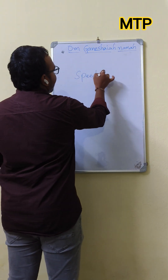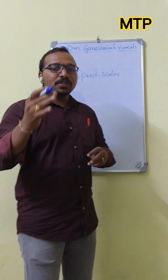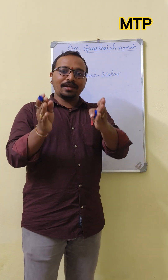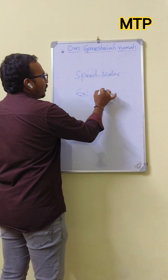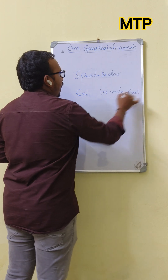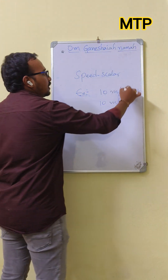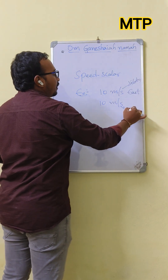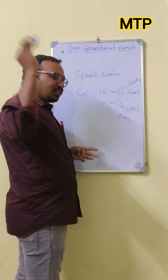Velocity, on the other hand, always has a particular direction. For example, if you take 10 meters per second east and 10 meters per second without a specified direction — the one with a direction is velocity, and the one without is speed, because speed can be in any direction.